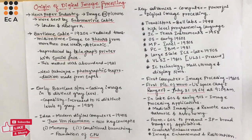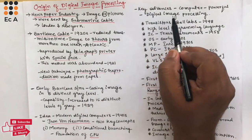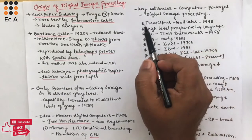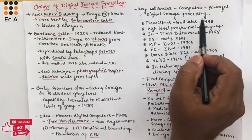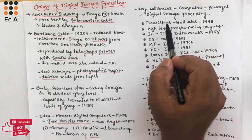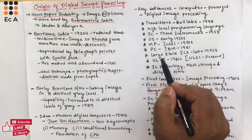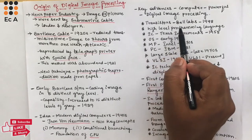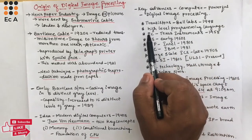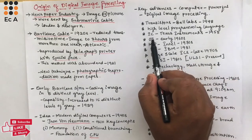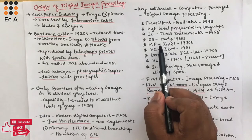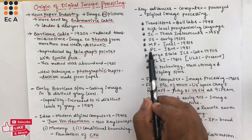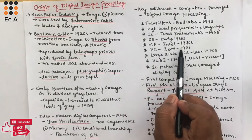These two concepts were the foundation to develop the CPU, which is the central processing unit — the heart of the computer. This series of key advances made computers powerful enough to be used for digital image processing. Some of the advances include: the invention of transistors by Bell Labs in 1948, the development of high-level programming languages, and the invention of ICs at Texas Instruments in 1958.